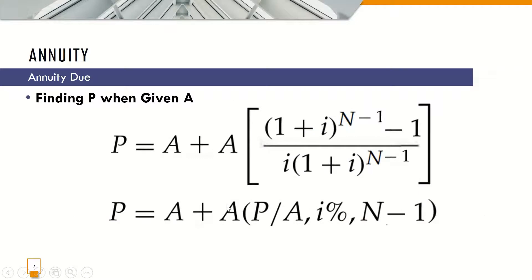The formula for Annuity Due in finding P when A is given is P equals A plus A times the quantity of 1 plus I raised to N minus 1, then minus 1, all over I, times 1 plus I raised to N minus 1. And in symbolic form, that is A plus A times P given A at I percent and N minus 1 periods.